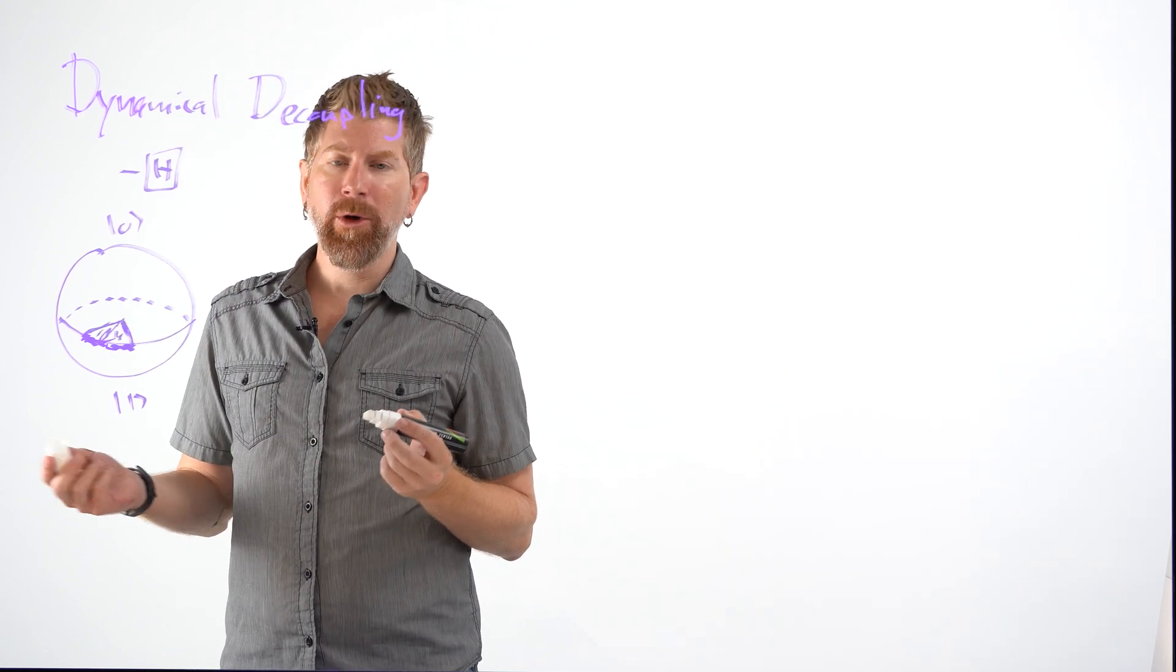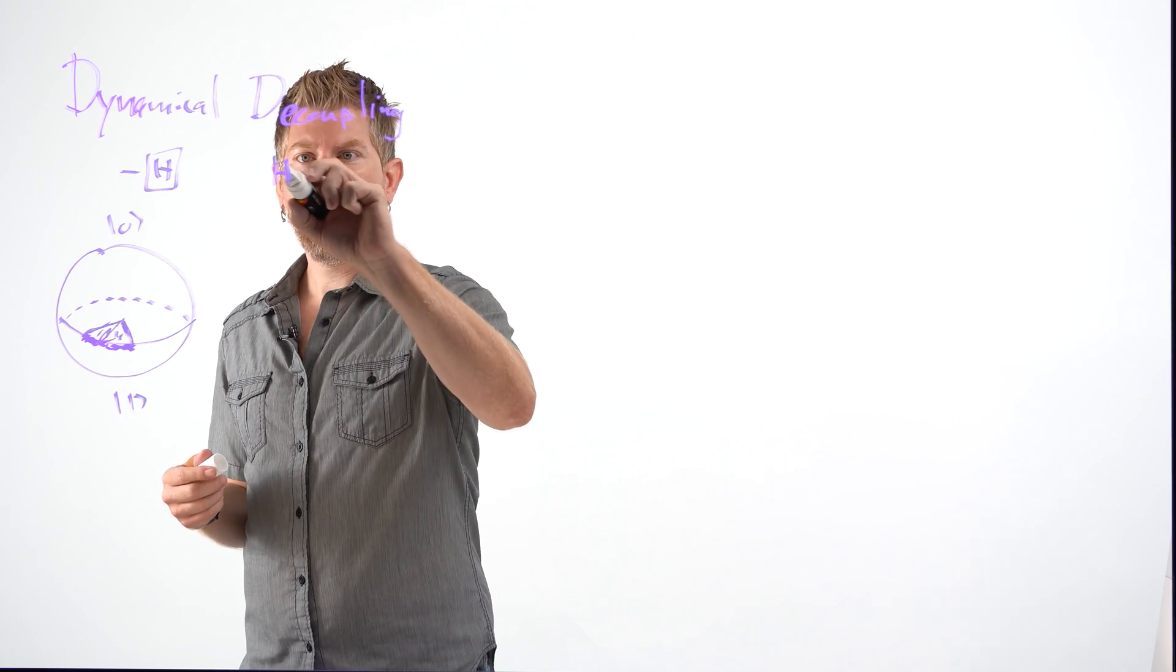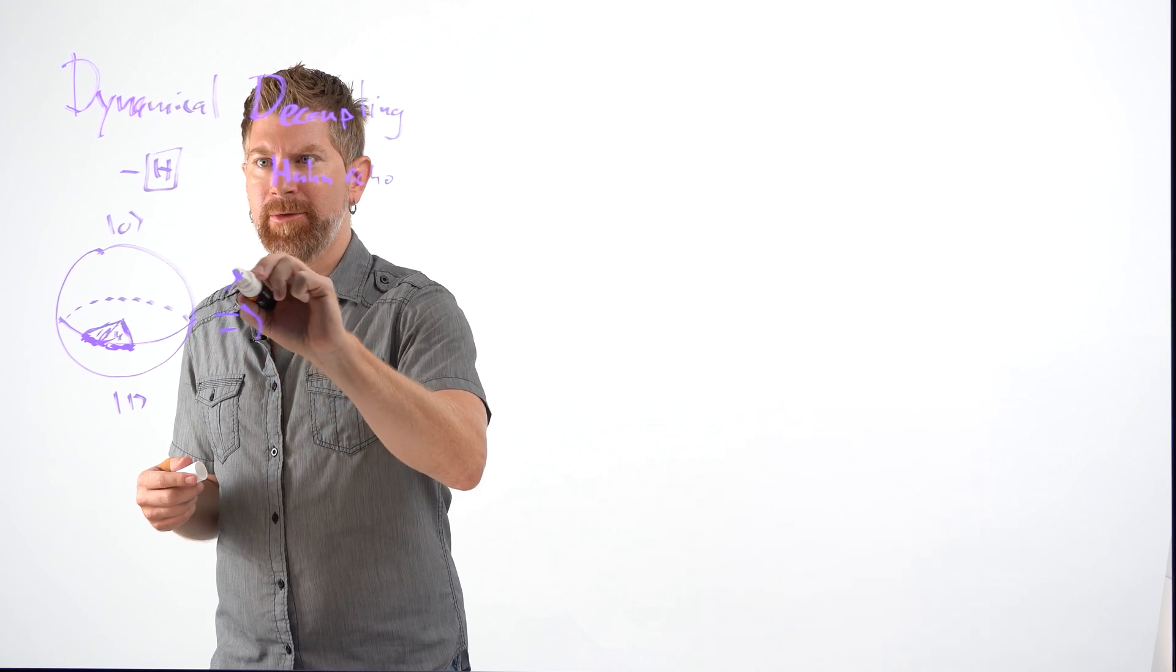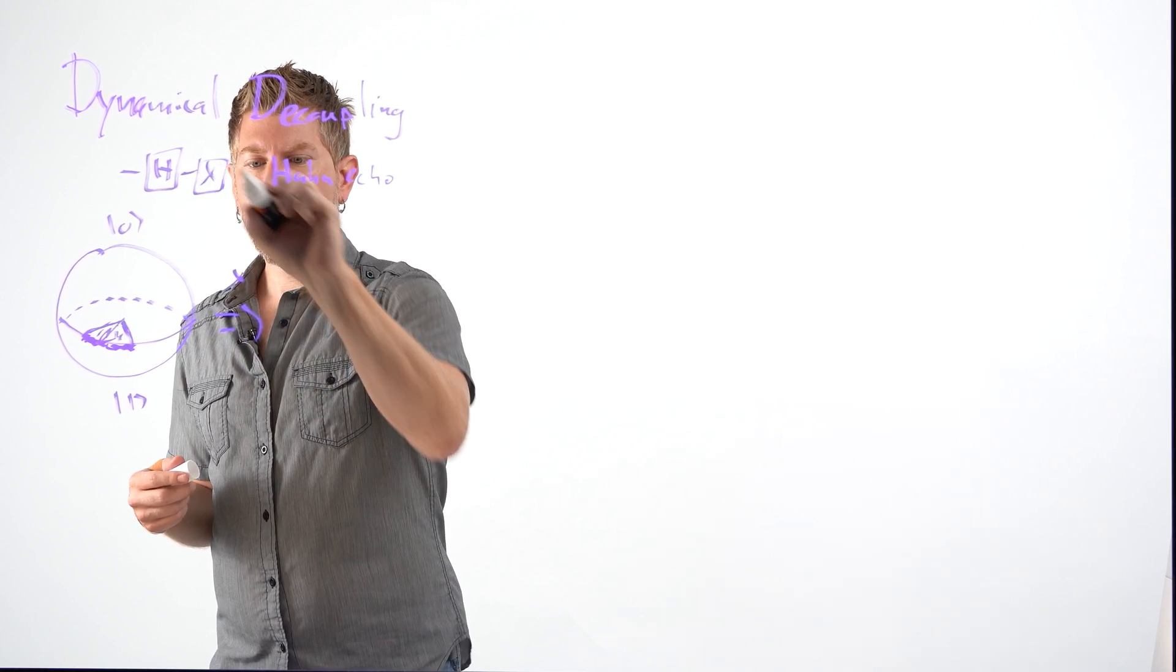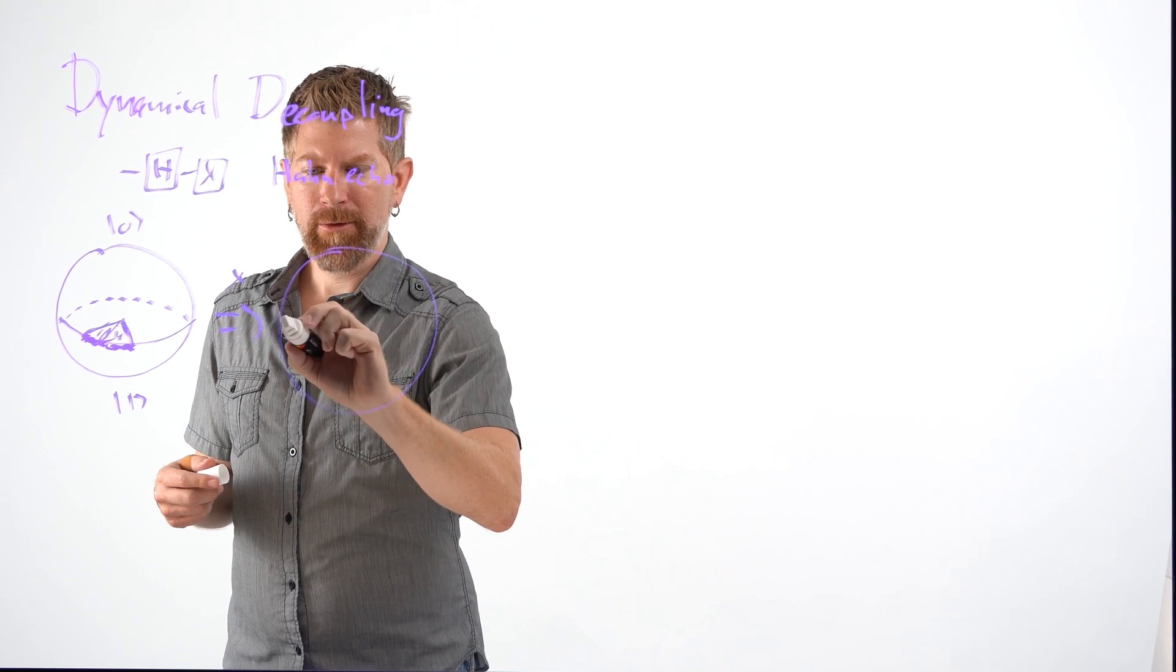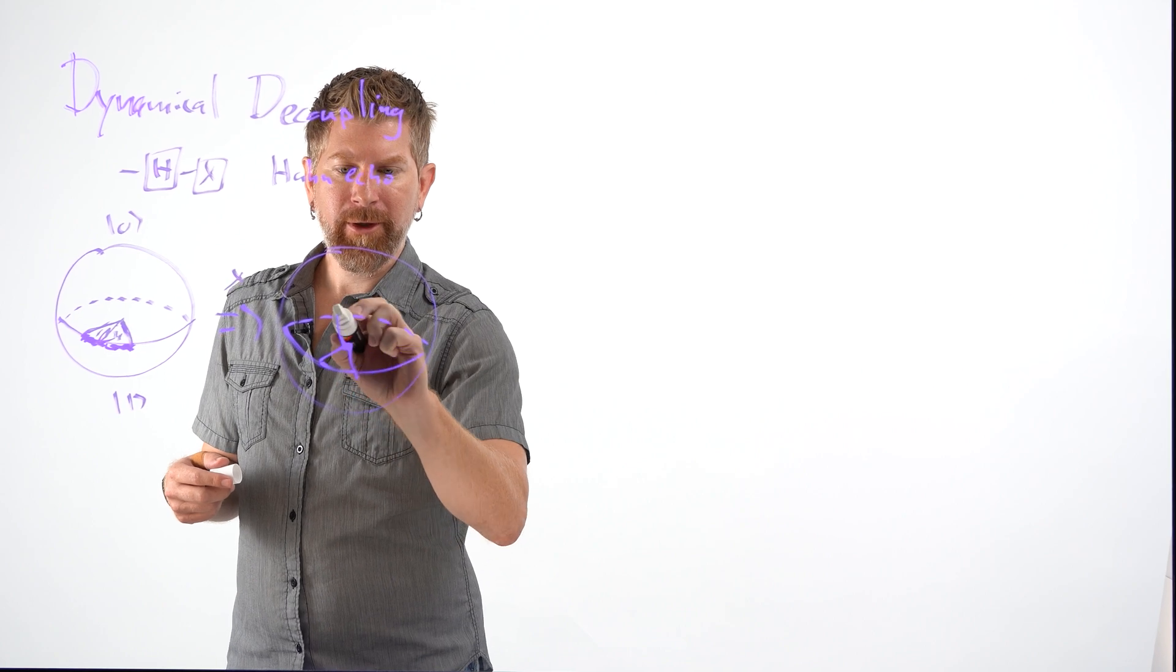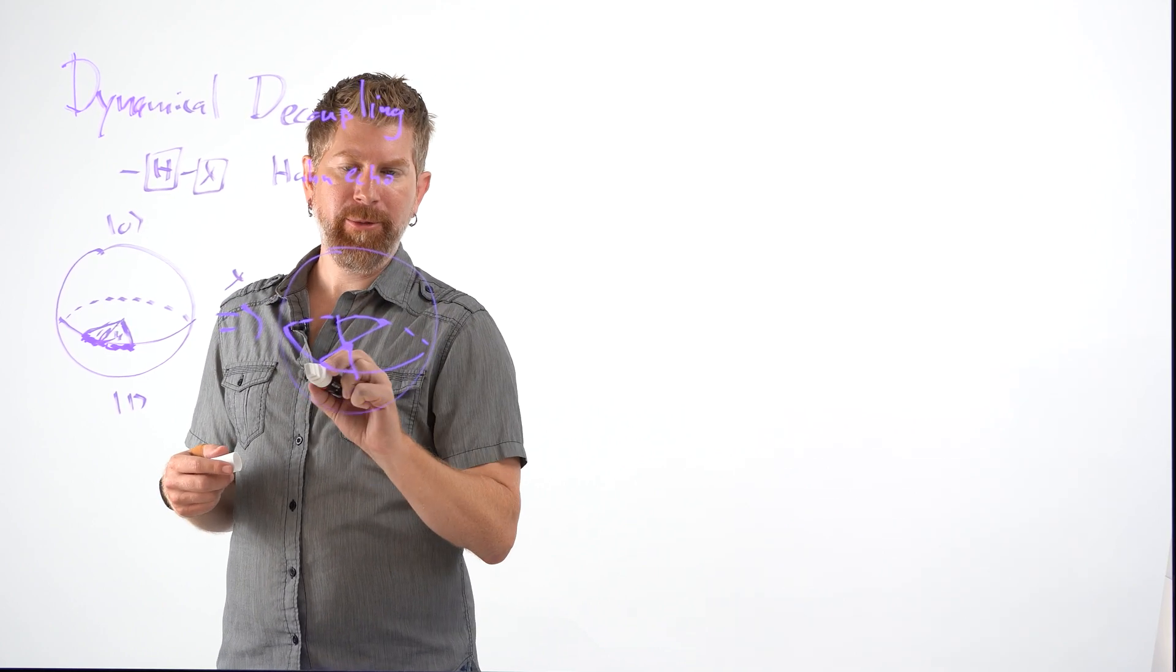So what do you do about it? Well, we'll do something called a Hahn Echo, which is essentially just an X gate. And what that will do is we'll flip this wedge over here into a new wedge on the other side of the Bloch sphere.